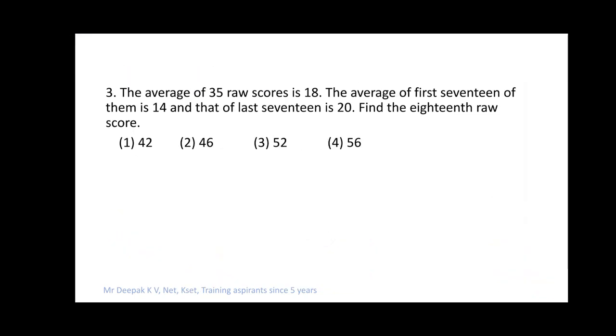Question 3: The average of 35 raw scores is 18. The average of the first 17 is 14 and the last 17 is 20. Find the 18th raw score.